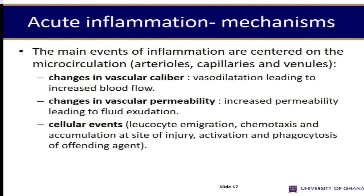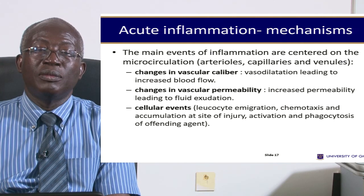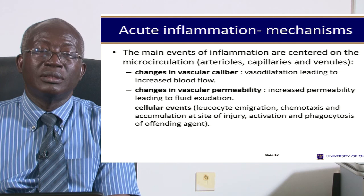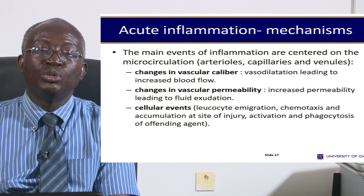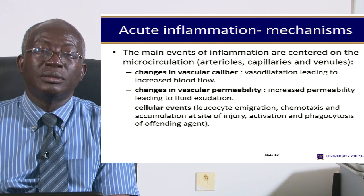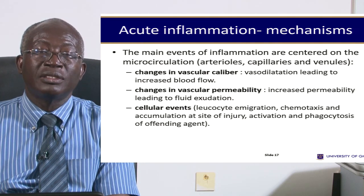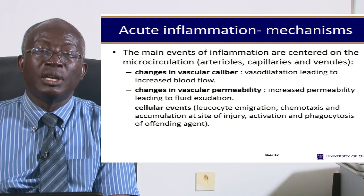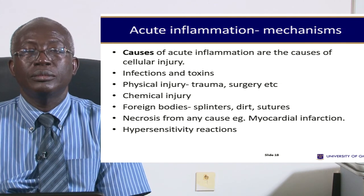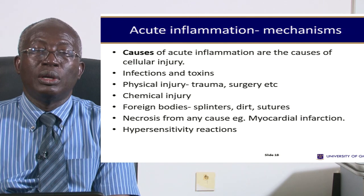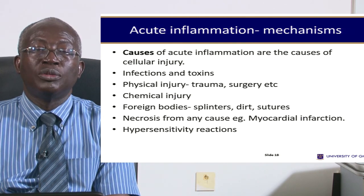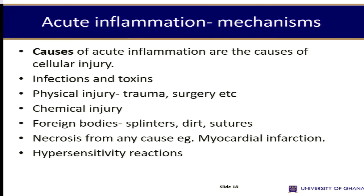The main events of acute inflammation are: changes in the caliber of the vessel so that it becomes bigger, changes in the permeability of the vessels so that more fluid moves out, and then the cells within the vessel move out. The cellular events are leukocyte emigration, chemotaxis, accumulation at the site of injury, and phagocytosis of the offending agents. Acute inflammation is caused by infections, toxins, physical agents, chemical reagents, foreign material, necrosis from any cause, and hypersensitivity reactions — for instance, a heart attack called myocardial infarction will cause inflammation around it.